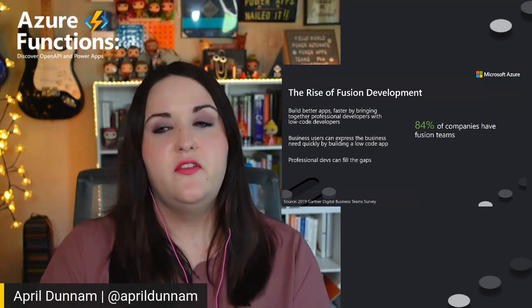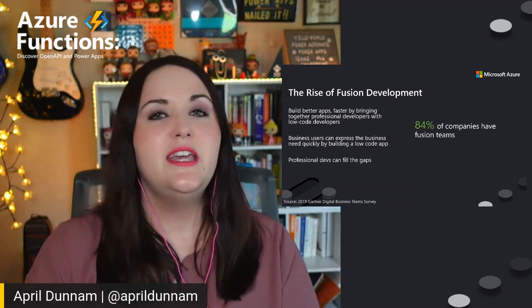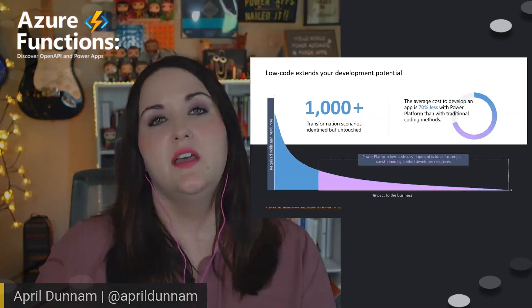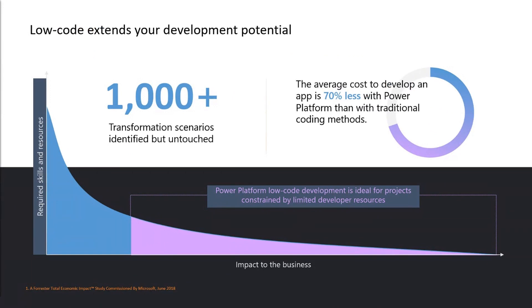This saves a ton of time and allows the app building process to be really iterative — with the possibility of several iterations a day. That's really the benefit of embracing this fusion development model. With low code, it truly extends your development potential. The average cost to develop an app is estimated at about 70% less with Power Apps and the Power Platform than with traditional coding methods. So there's so much potential for projects that might have been constrained by limited developer resources.